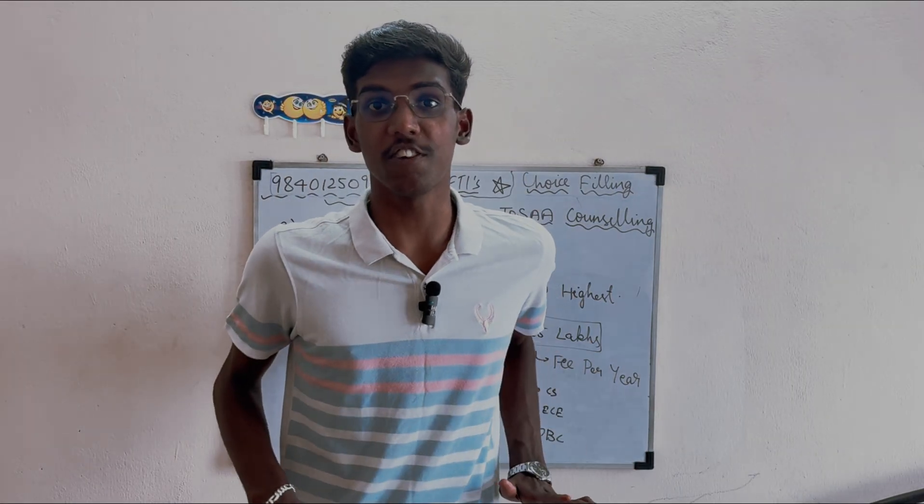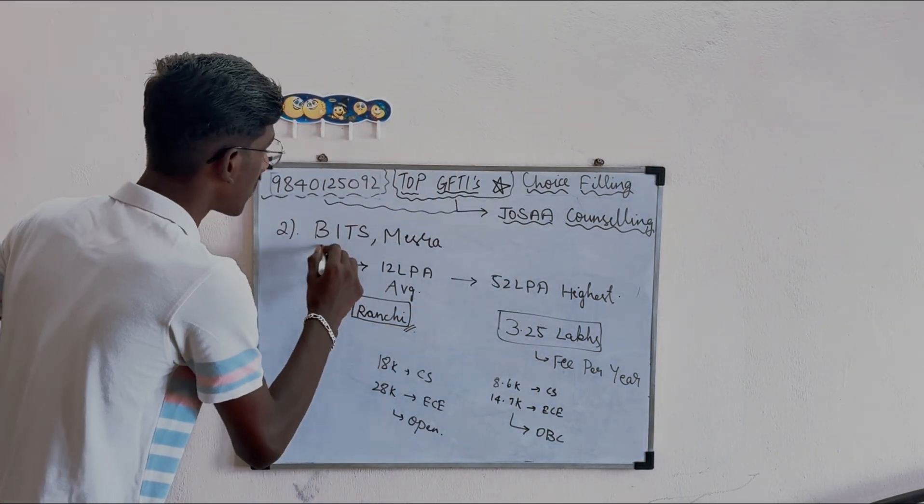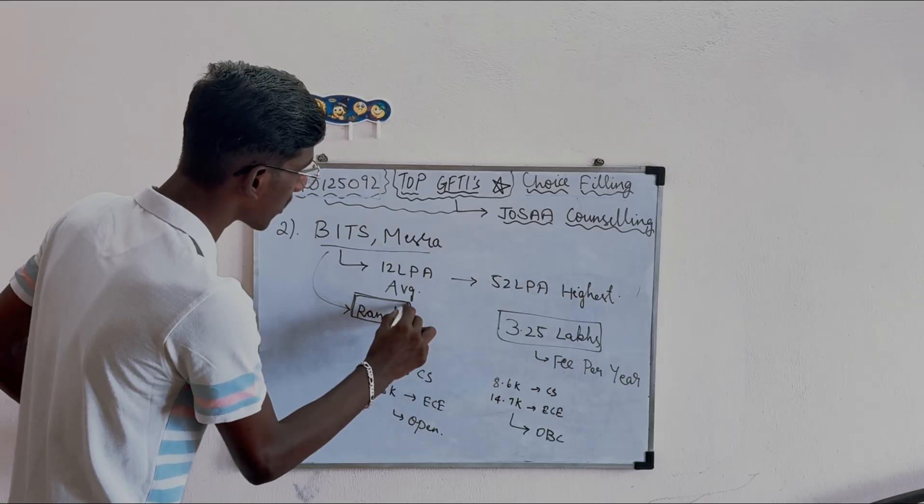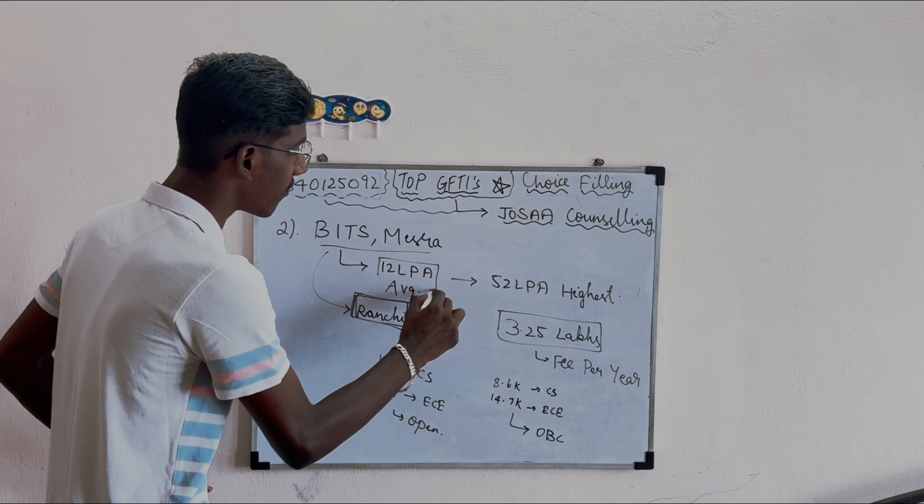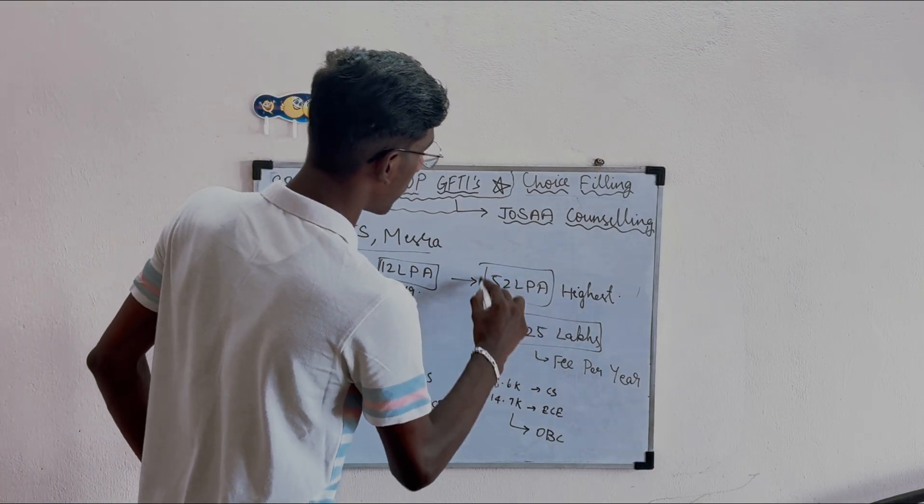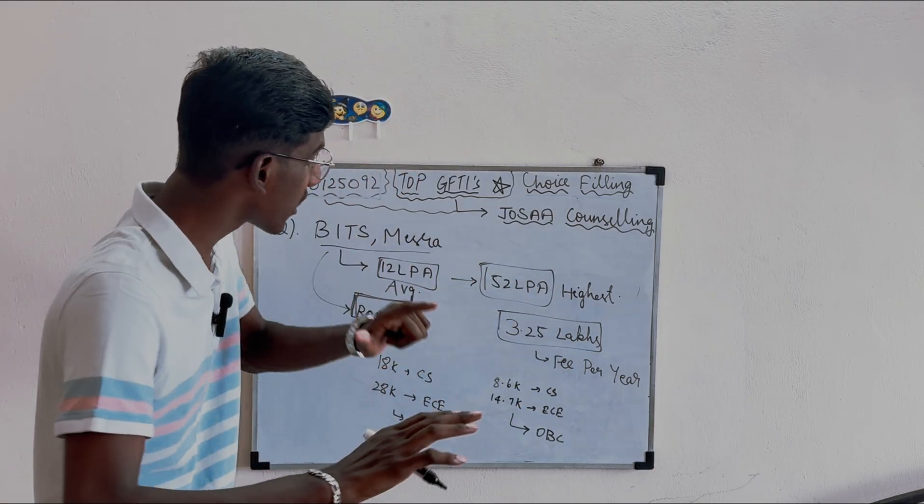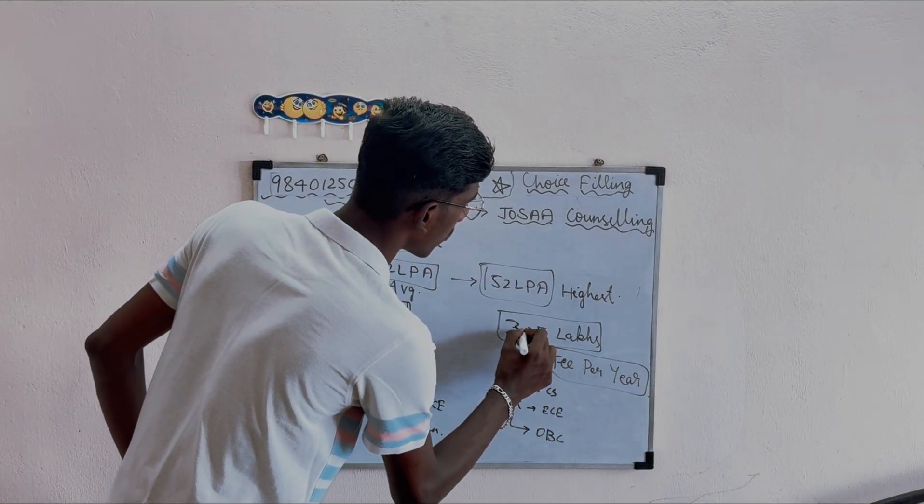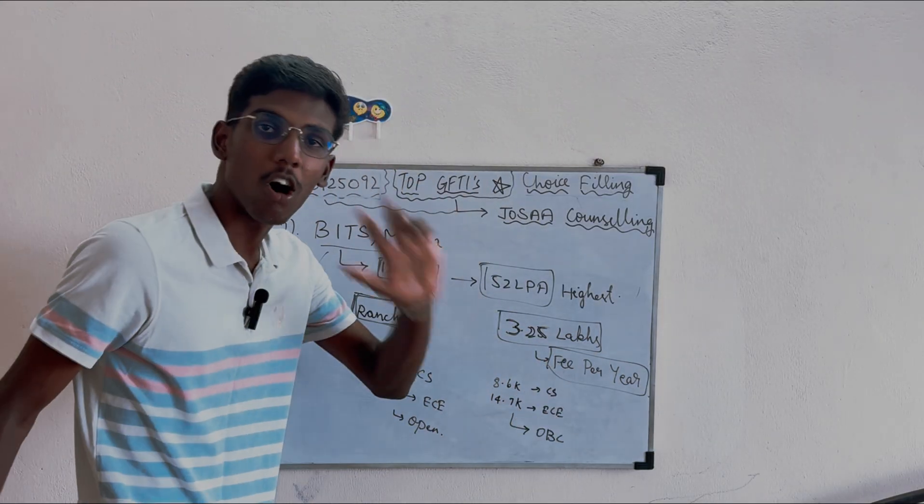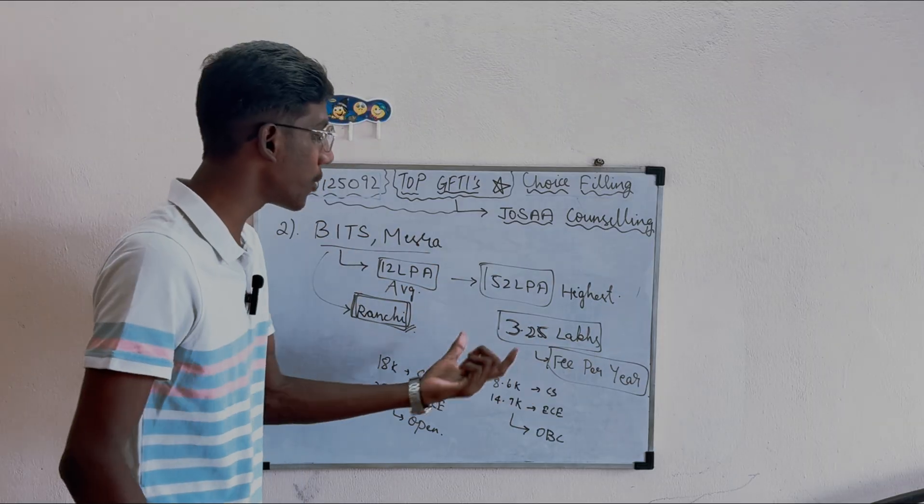Second best GFTI is BITS Mesra, Ranchi, Jharkhand. Average LPA is 12 LPA, highest is 52 LPA. Fee per year is 3.25 lakhs including academic fees.